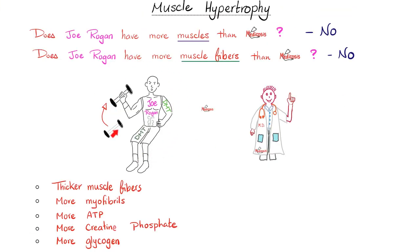Joe Rogan is more muscular — but does that mean he has more muscles or more muscle fibers? No to both. He has thicker fibers, more myofibrils, more ATP, more creatine phosphate, and more glycogen.